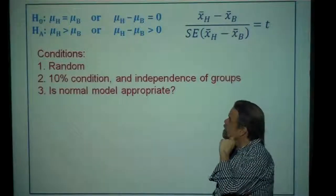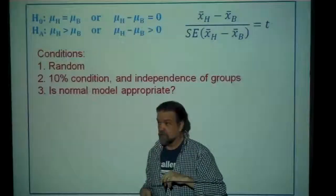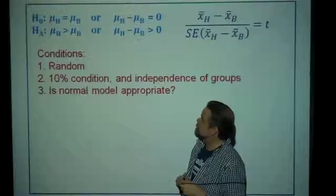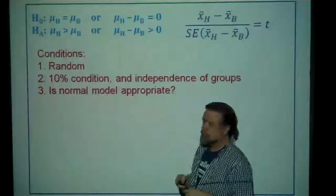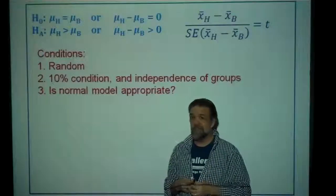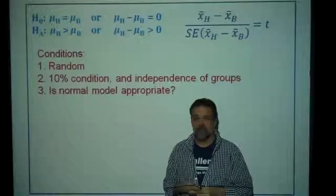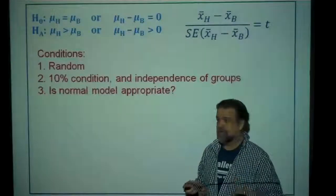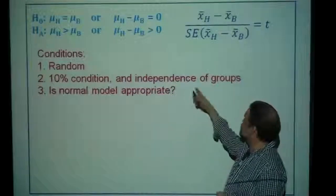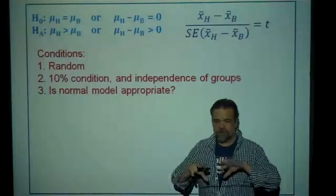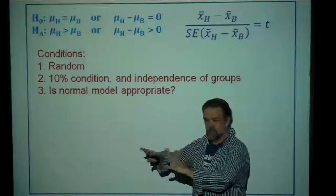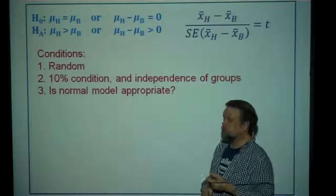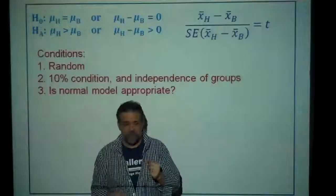Before computing, we check our conditions. First, were the samples random? Yes — the description says they went to considerable pains to make the sampling as unbiased as possible. Second, the 10% condition: 10 and 12 are certainly less than 10% of all pizzas those restaurants deliver. Third, independence of groups: the two samples were gathered completely independently — one does not affect the other.